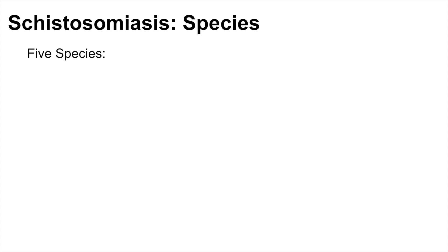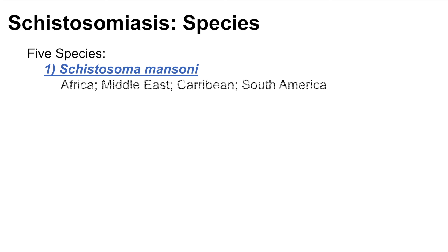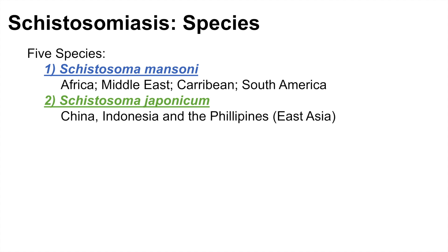There are five different species of schistosoma blood fluke that can cause schistosomiasis, and each has a different geographical range. The first one is schistosoma mansoni, located in Africa, the Middle East, the Caribbean, and South America. The next one is schistosoma japonicum, located in China, Indonesia, and the Philippines.